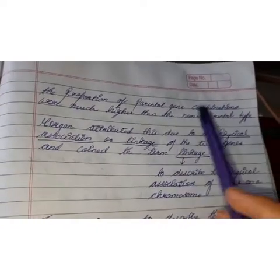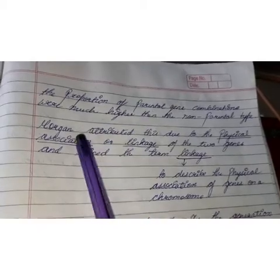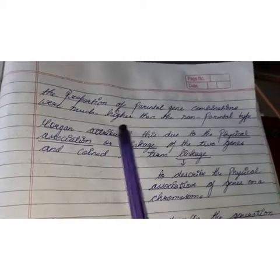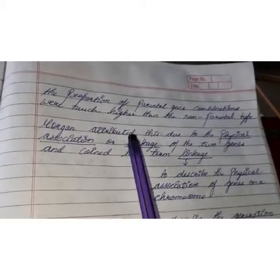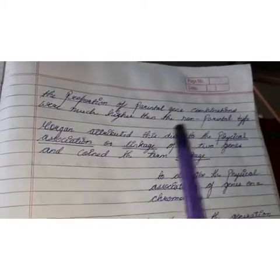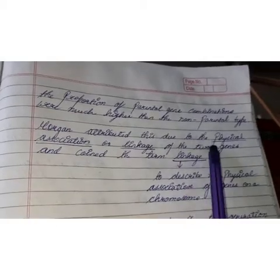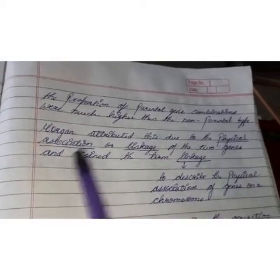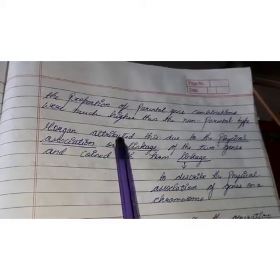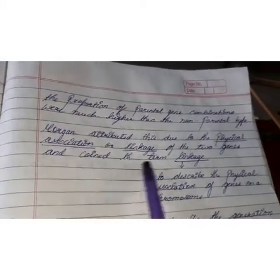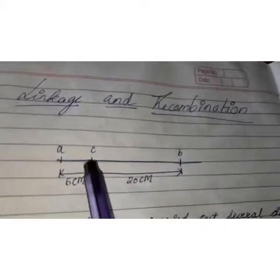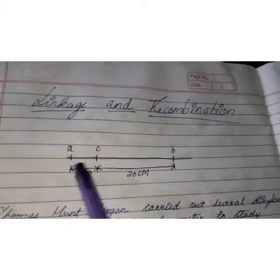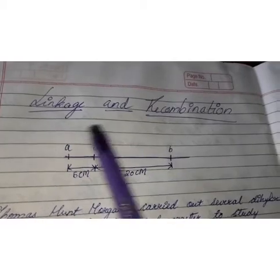Why is this recombination rate low? He concluded that this may be due to the physical association between the two genes. Let us take a simple example: suppose there is a gene A, gene C, and a gene B.